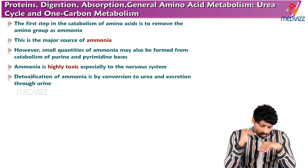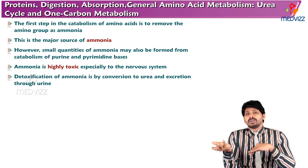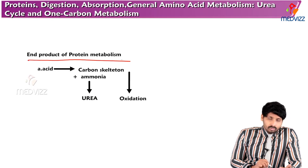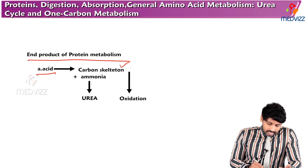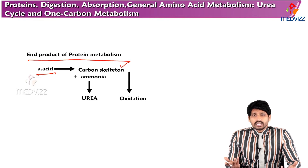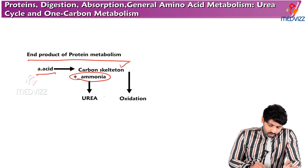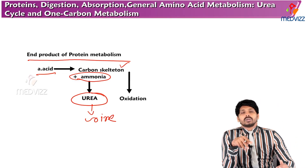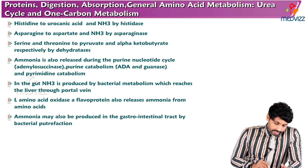Transamination reactions allow free ammonia to be taken up by keto acids to form amino acids. Once these amino acids reach the liver, they undergo deamination to form free ammonia, which enters the urea cycle and is excreted in urine. The end product of protein metabolism includes the carbon skeleton, which undergoes gluconeogenesis and complete oxidation via glycolysis and the TCA cycle, while the amino group is released as ammonia and converted to urea. Humans are therefore ureotelic.